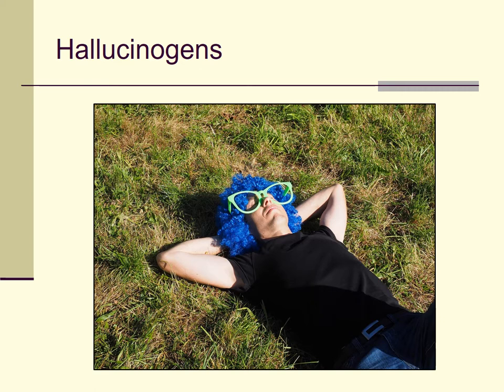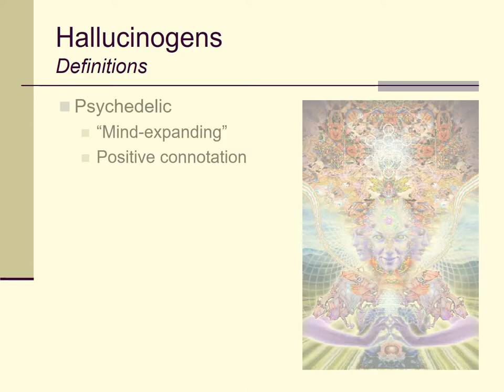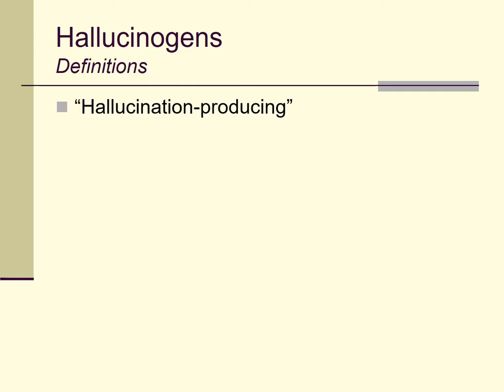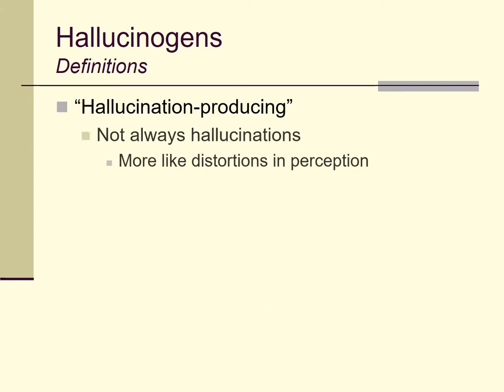They're a diverse group of drugs, and we sometimes hear an older term thrown around when we talk about hallucinogens — that's the word psychedelic, meaning mind-expanding, a positive connotation for the idea of drugs changing or enhancing the way the mind works. We sometimes hear the term hallucinogen, suggesting that these are hallucination-producing drugs. In a way it's a bad name because we don't always see hallucinations from drugs in this group.